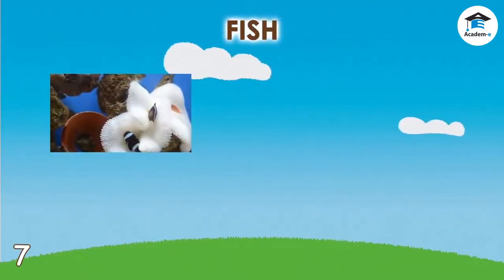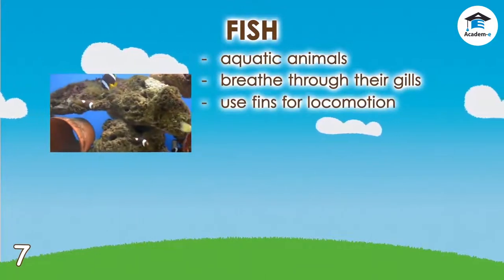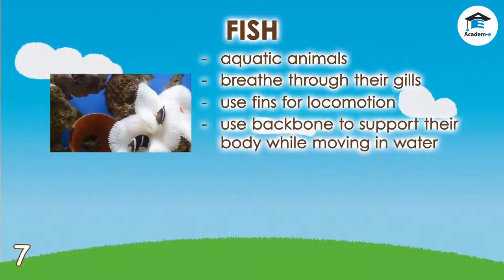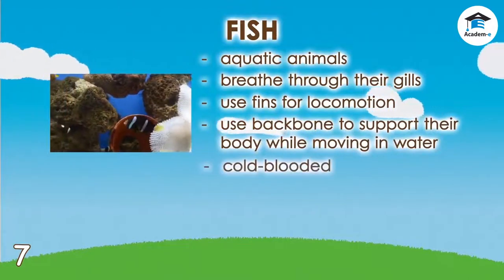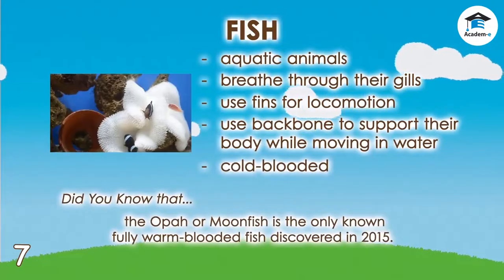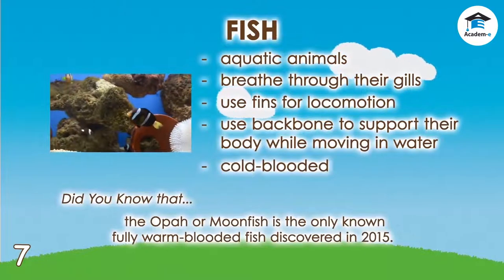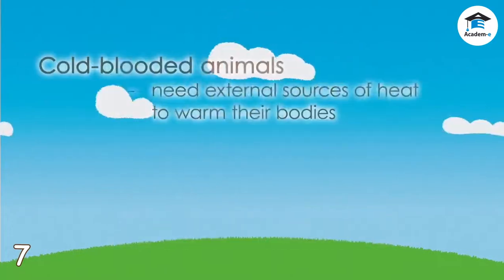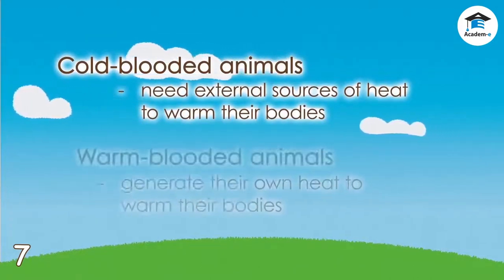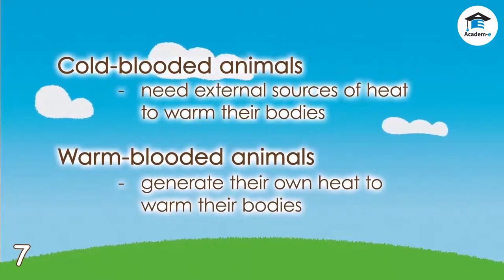Fish are aquatic animals that breathe through their gills. They use fins for locomotion. Their backbone supports their body while moving in water. They are cold-blooded, except for the opah or moonfish, which was discovered in 2015 to be the only known fully warm-blooded fish. Cold-blooded animals need external sources of heat to warm their bodies, while warm-blooded animals can generate their own heat.